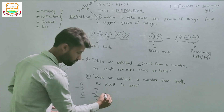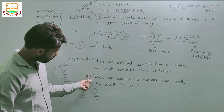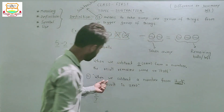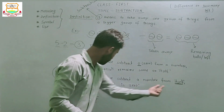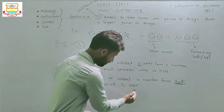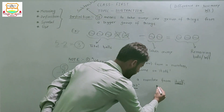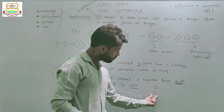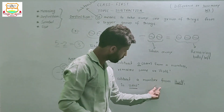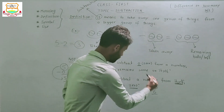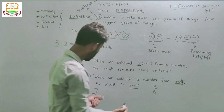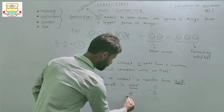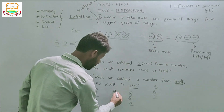The next point is: when we subtract a number from itself, the result is always zero. For example, six minus six equals zero, eight minus eight equals zero. Another example: nine minus nine equals zero.